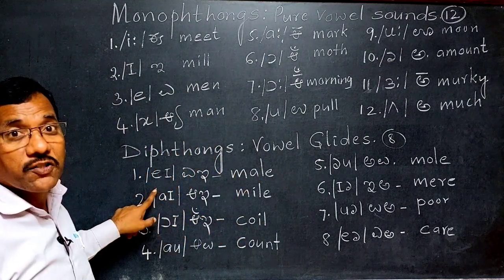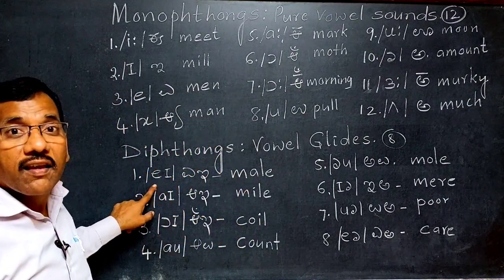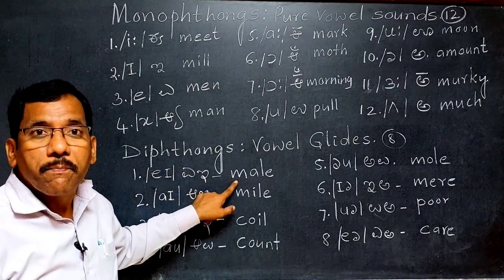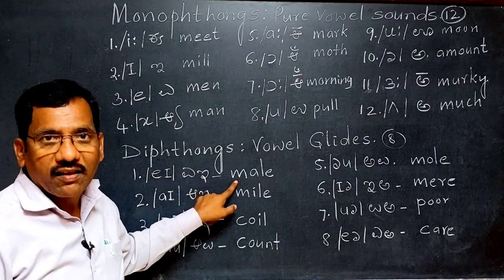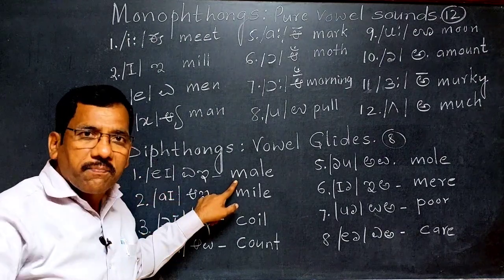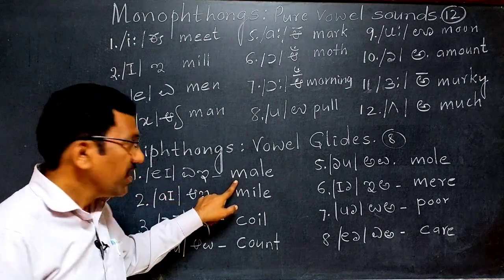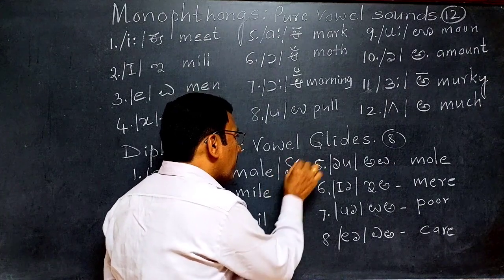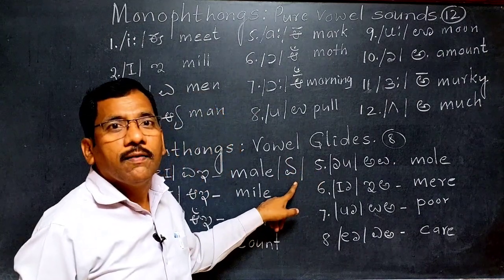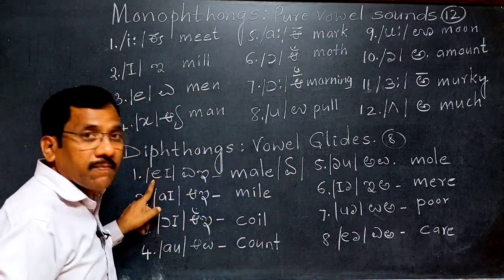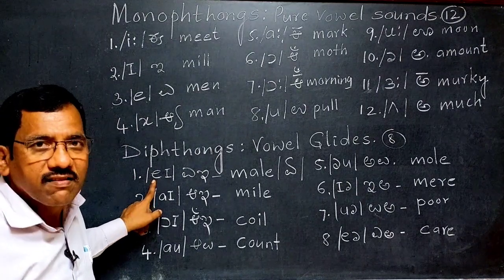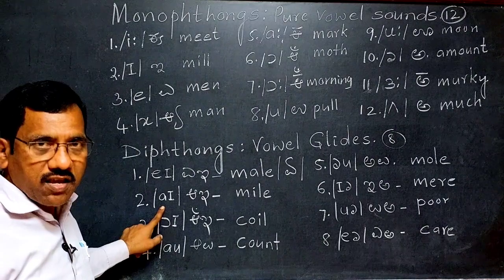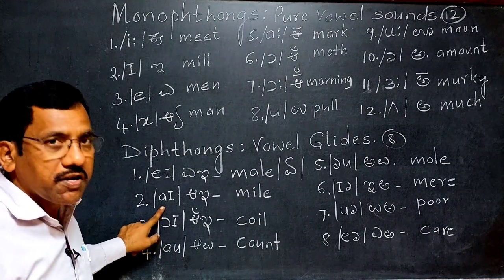The first diphthong is the 'EI' sound. For example, the word 'may.' In India we tend to pronounce it as 'may-il,' but in English we have to say 'may' — not 'may-il,' just 'may.' The second diphthong is the 'AI' sound.